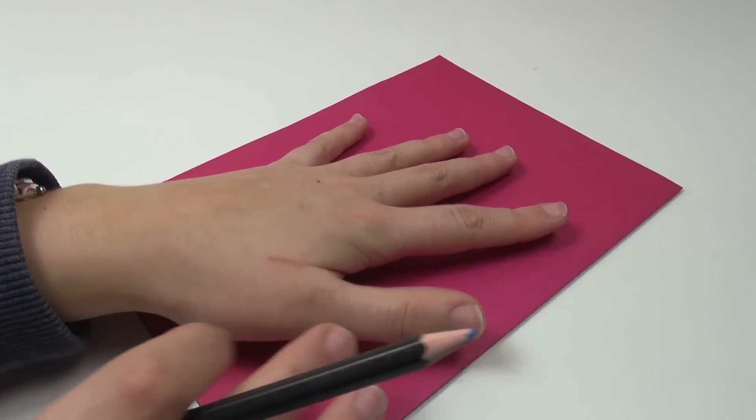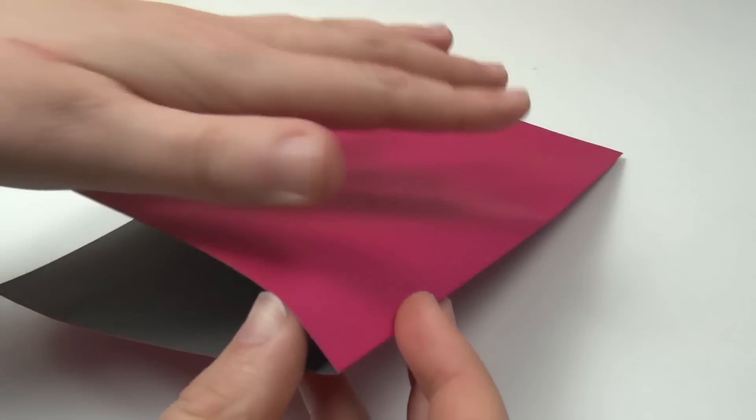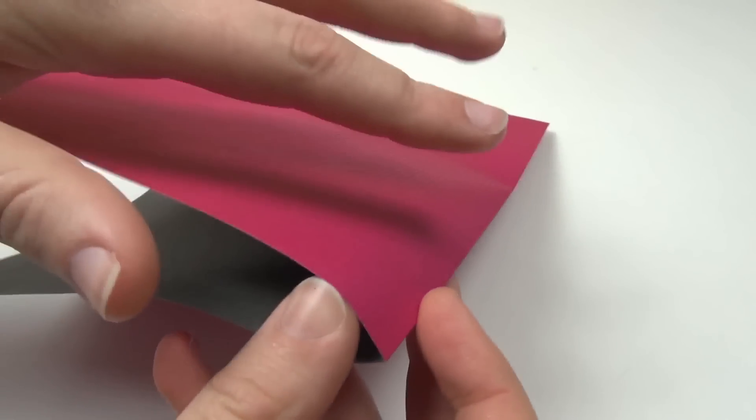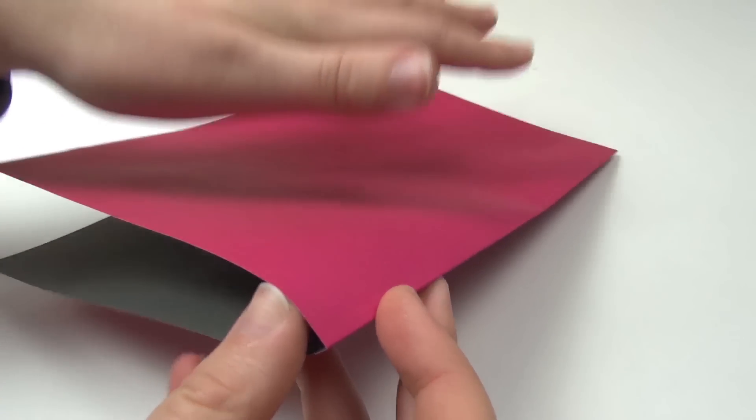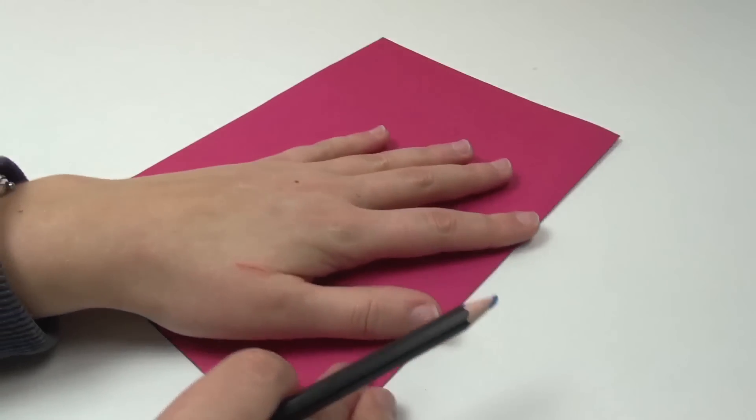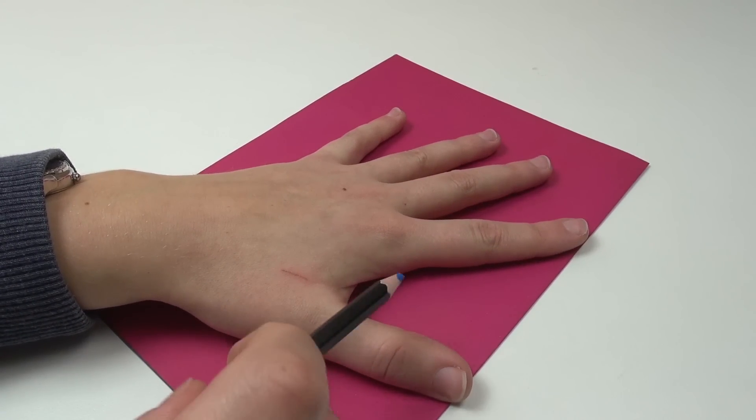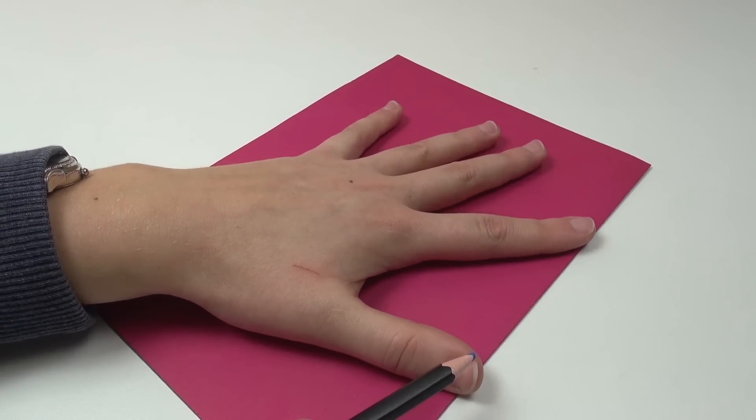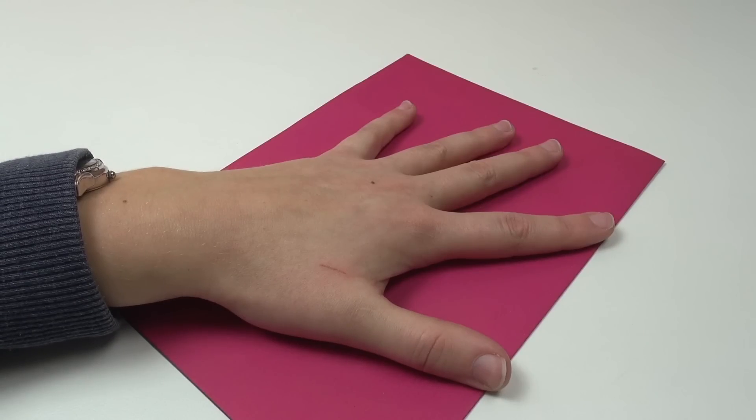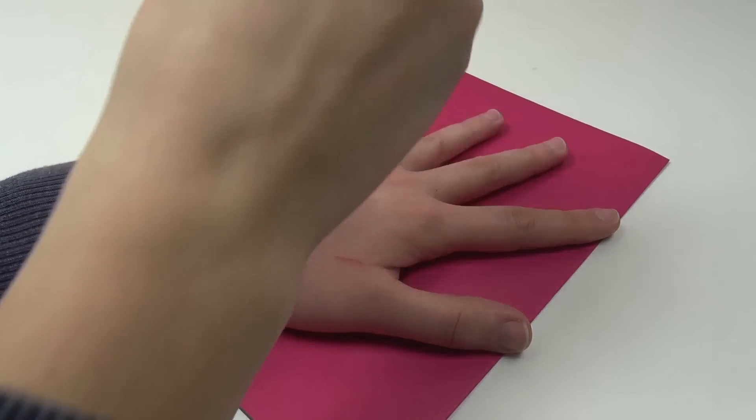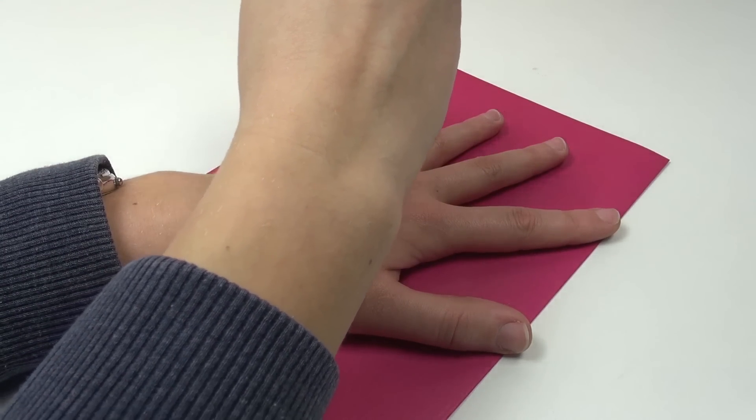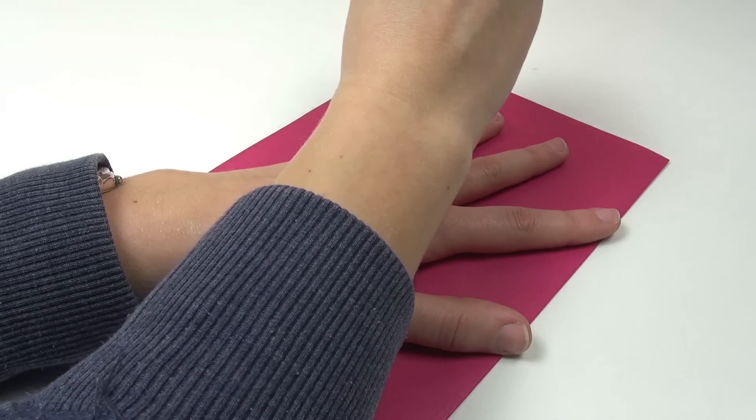Place the hand on the paper. So the thumb and the index finger need to be placed next to the fold. Then with the pencil we're going to draw or trace around our hand.